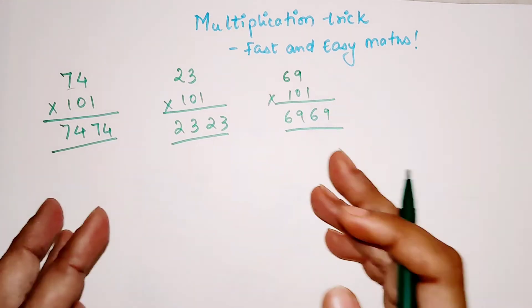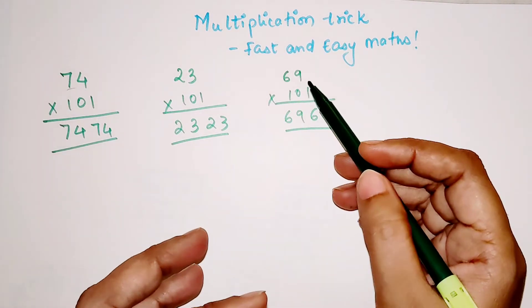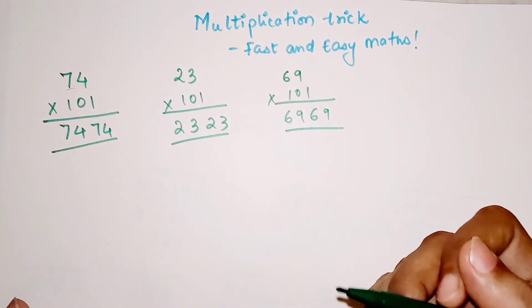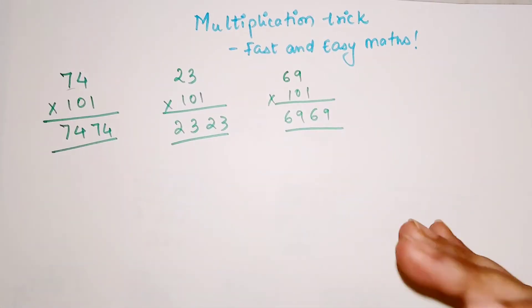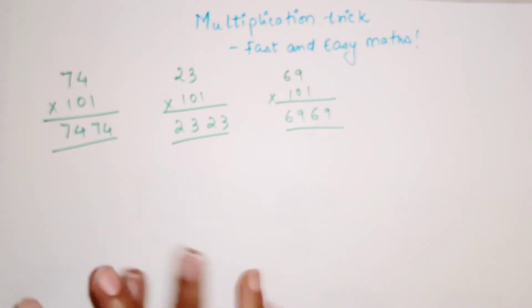Now you might be wondering, what if we get a number which is like 3 digit and 3 digit, then what happens? Don't worry, I am going to explain you the trick for that also. First let's just get the hang of this particular trick.